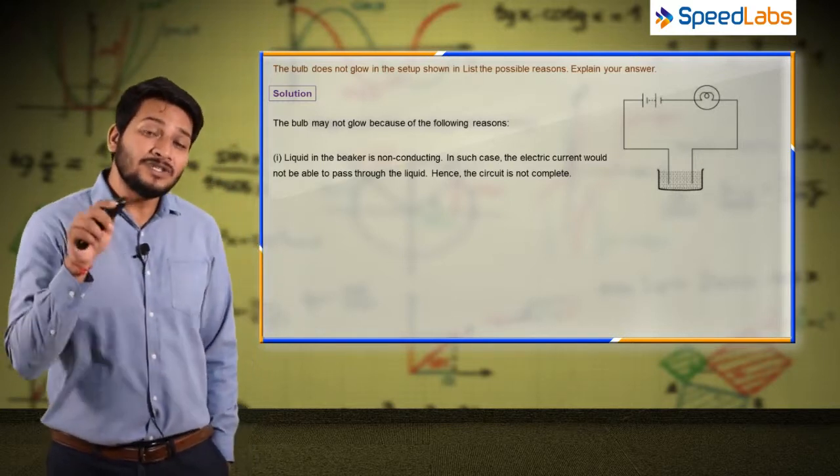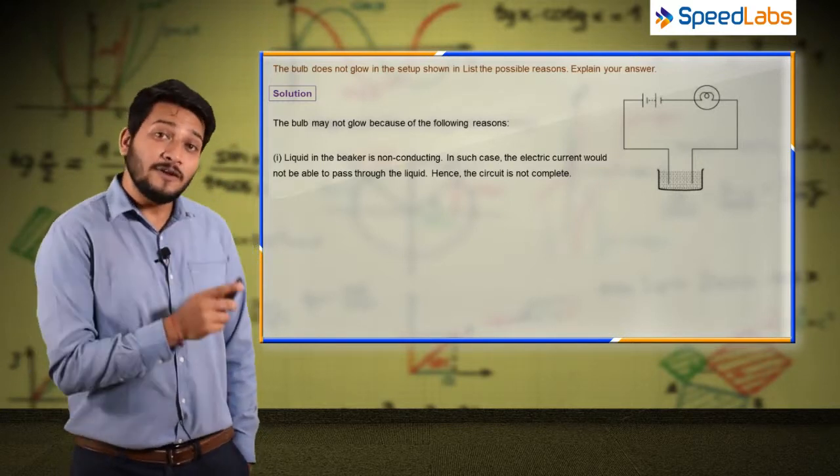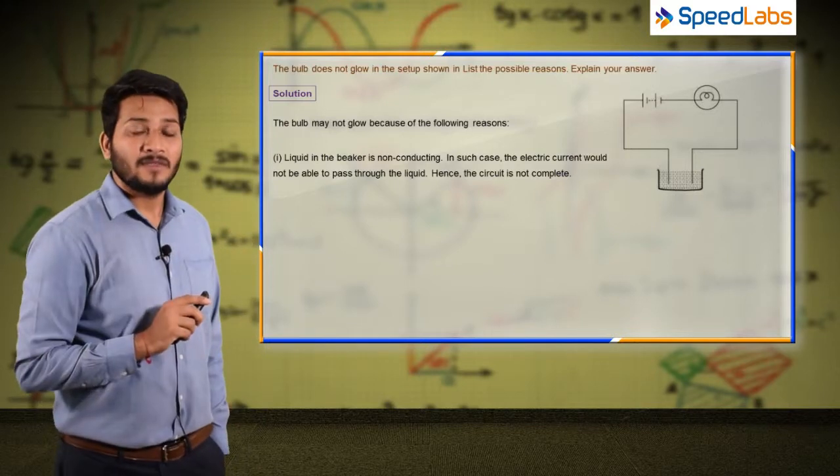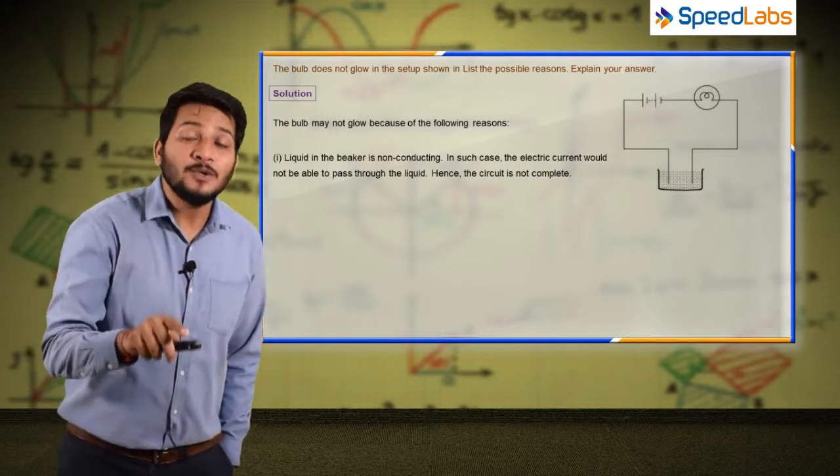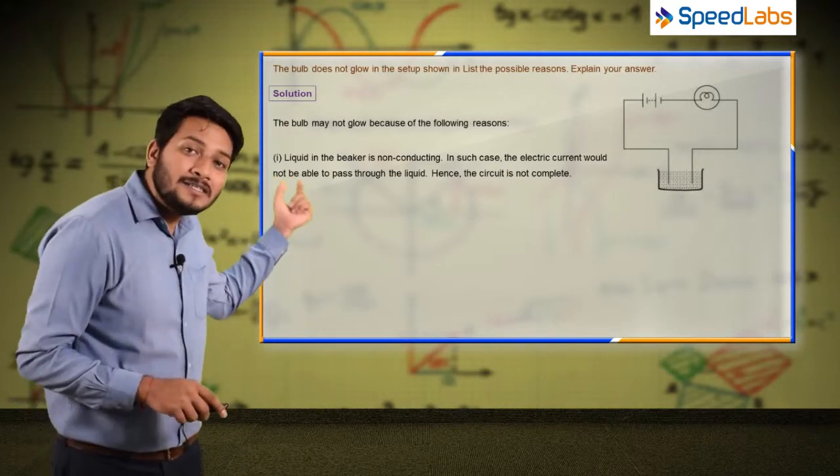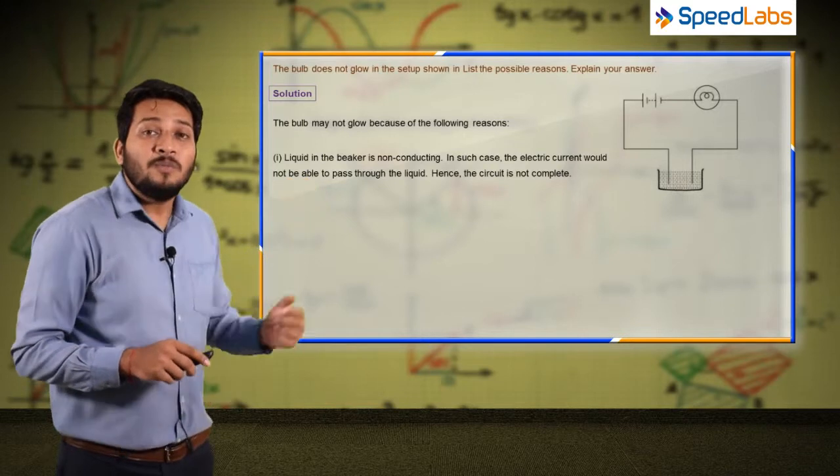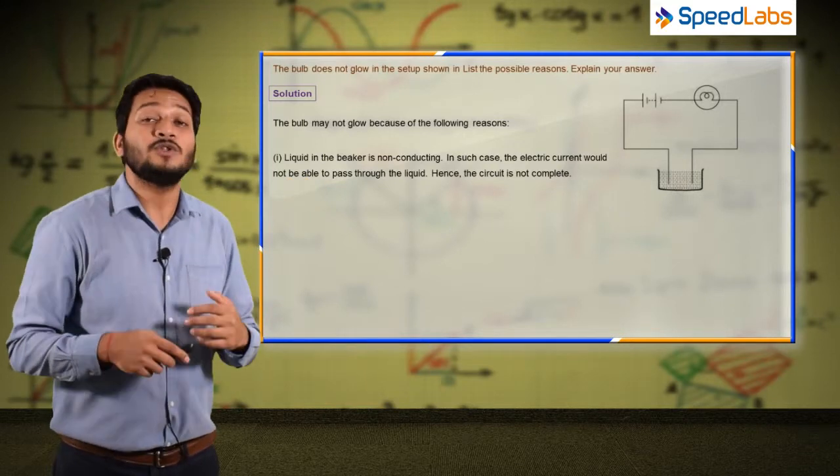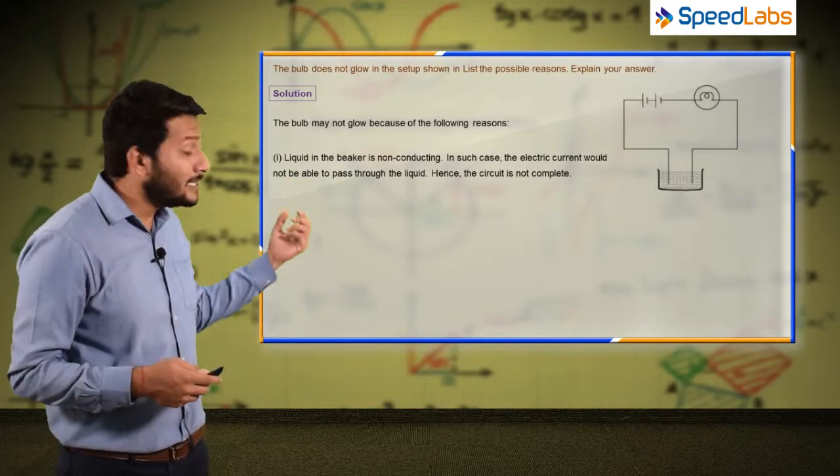Now what if the solution is conducting and still the bulb is not glowing? The reason could be that the current or electricity reaching the bulb is very low, which is not sufficient to light up the bulb.